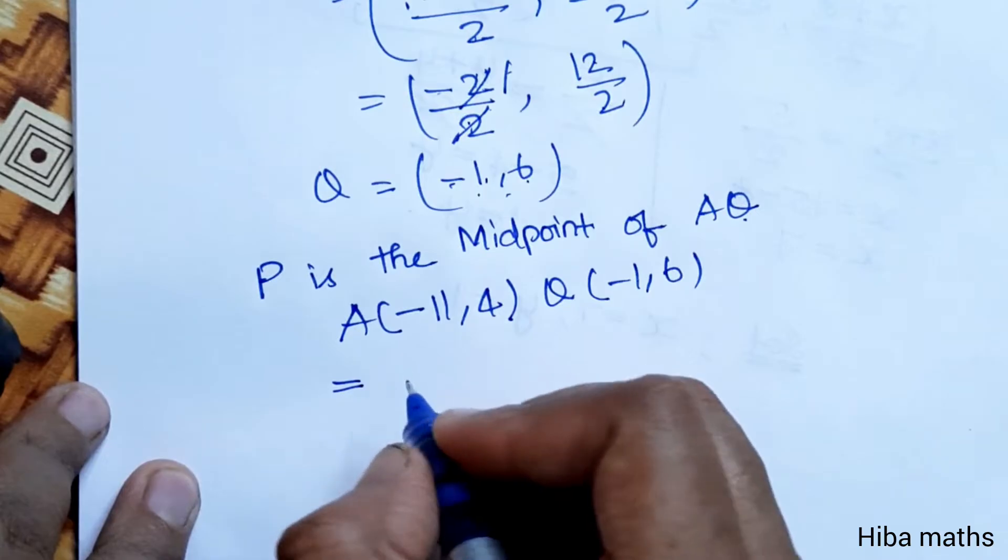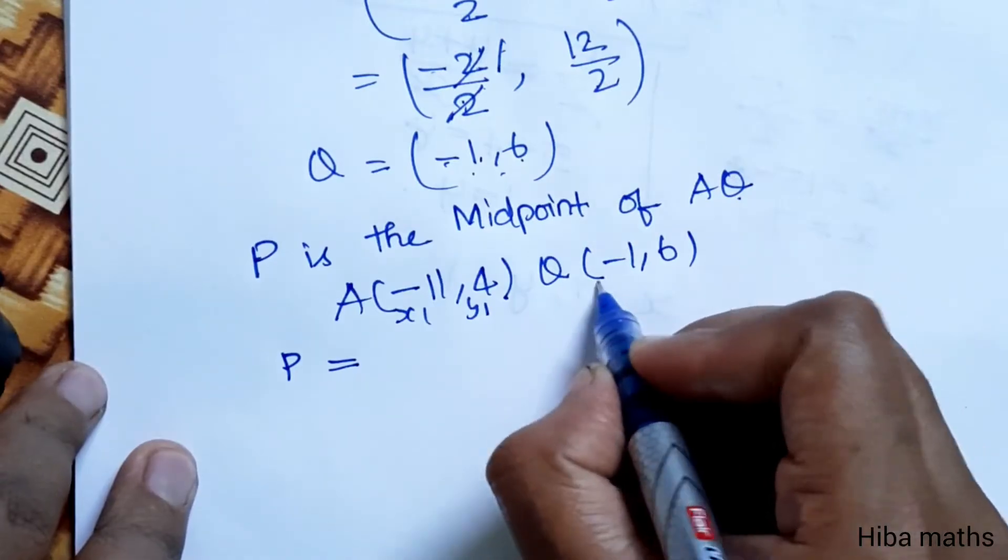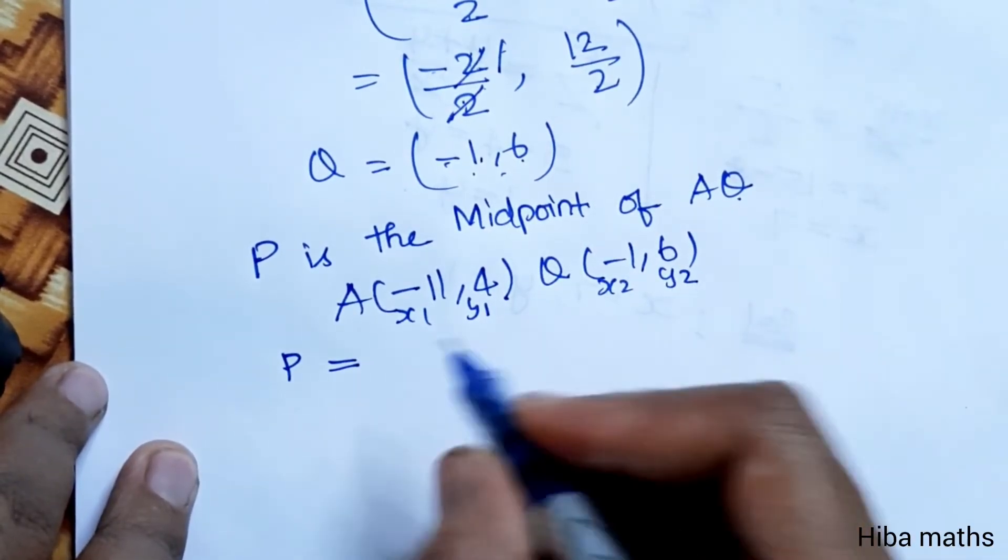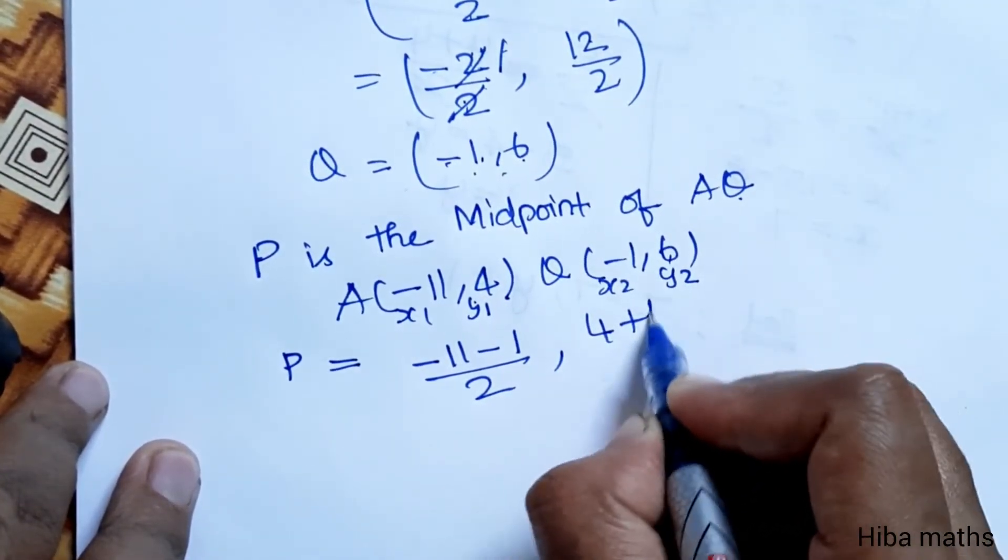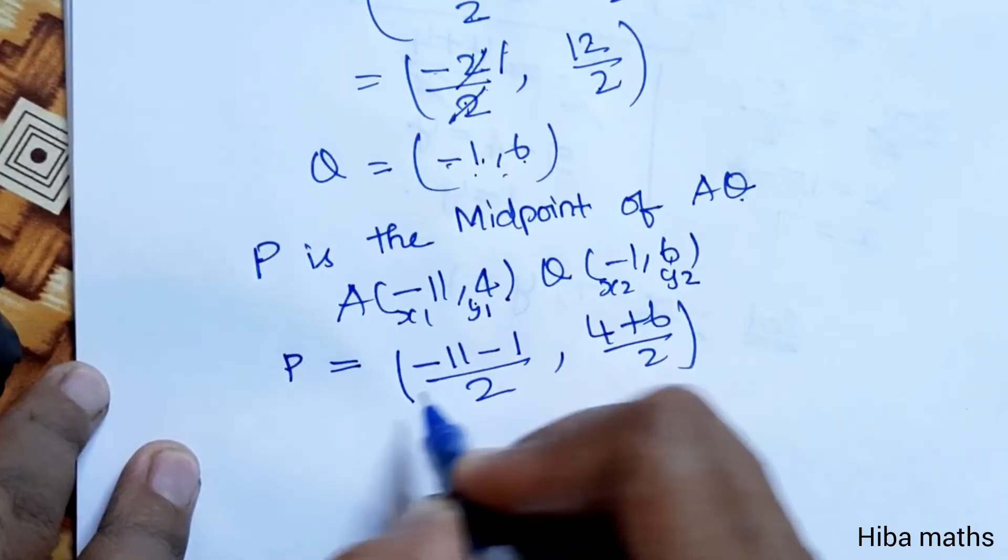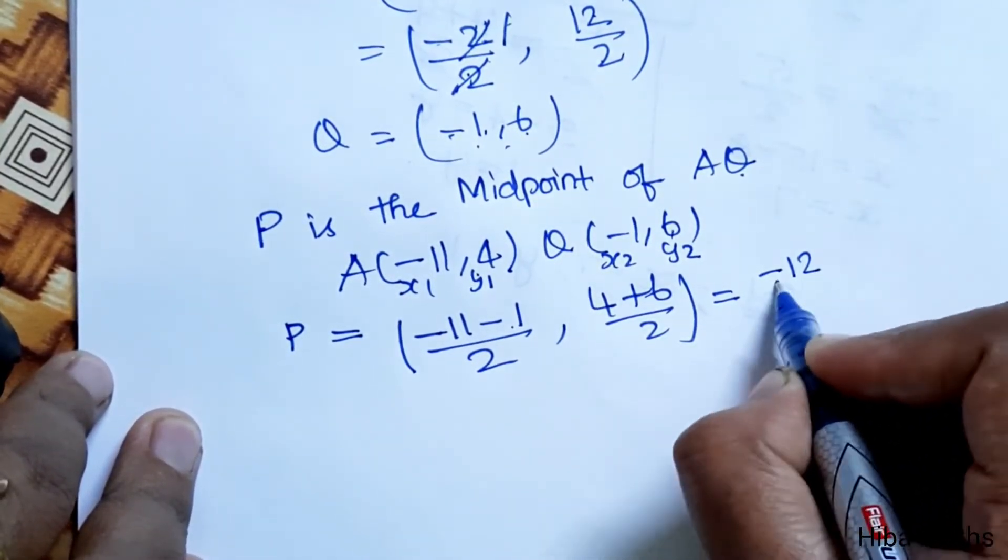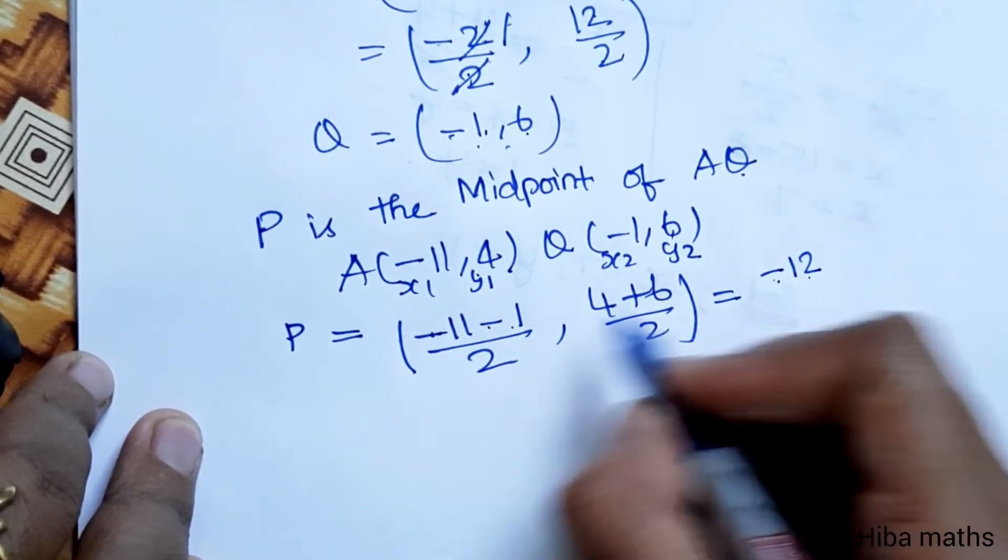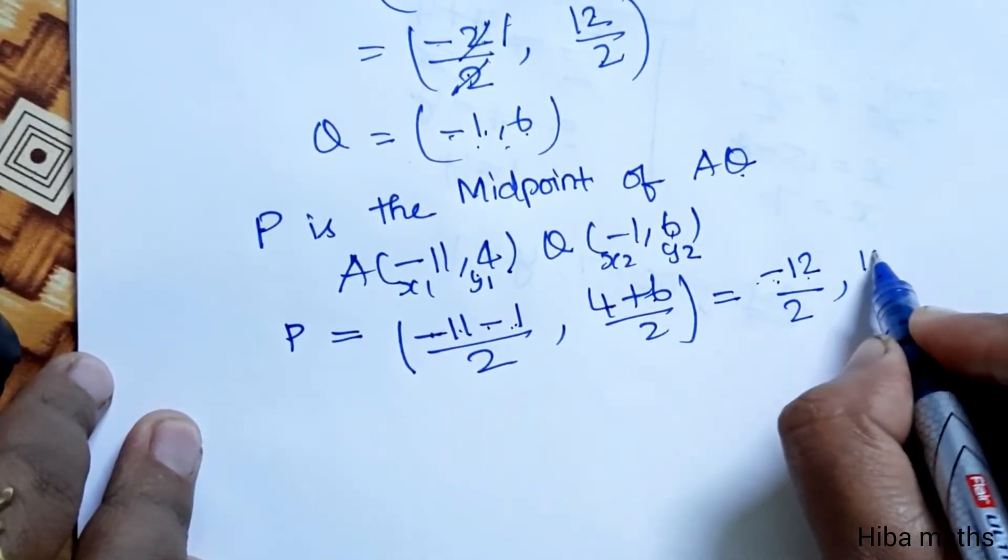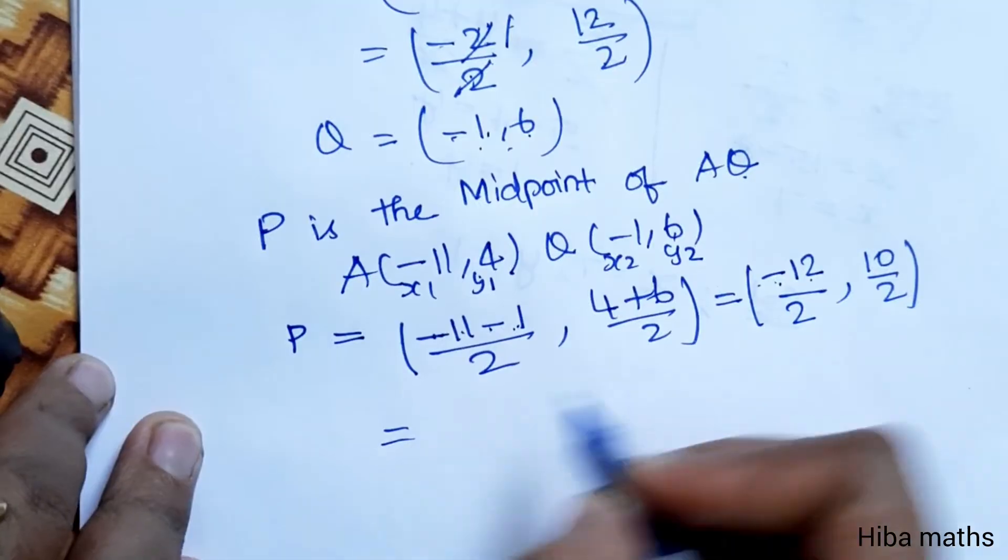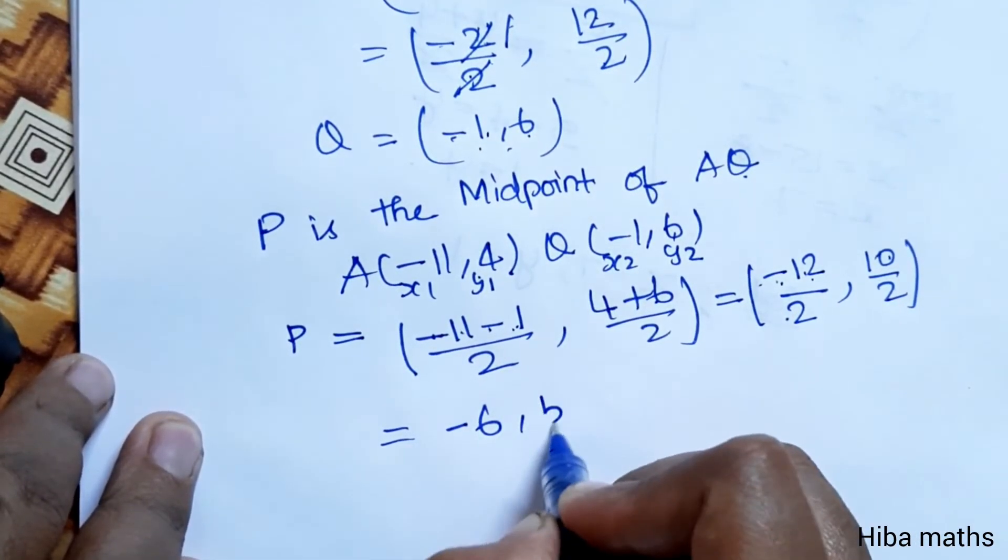Formula already we can use: x₁, y₁, x₂, y₂. (-11 + (-1))/2, (4 + 6)/2. -11 - 1, add the minus symbols: -12 by 2. 4 + 6 = 10, 10 by 2 = 5. -12/2 = -6. So point P is (-6, 5).